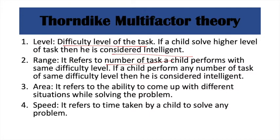Range is the number of tasks a child can perform at the same difficulty level — how many problems they can solve at the same difficulty determines their intelligence. Area refers to the different areas a child uses when solving a problem. For example, if a problem requires both mathematical intelligence and artistic intelligence, how well the child excels in both those areas determines their intelligence level.